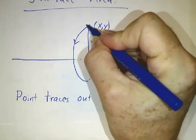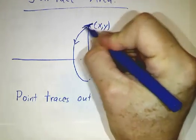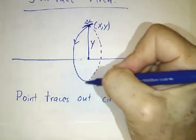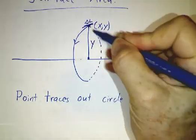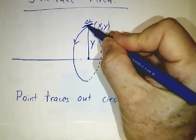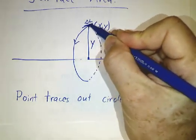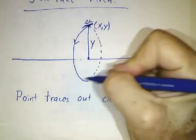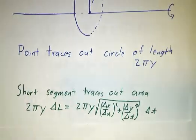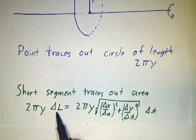If you start off with a segment here of length Δl and you whip that around, it doesn't matter whether it's vertical or horizontal or slanted. If you start off with something of length Δl and whip that around, you're gonna get something with an area of 2πy times Δl.